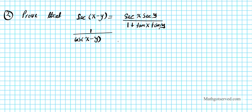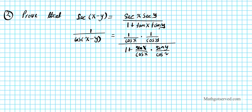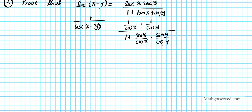On the right side: secant x becomes 1 over cosine x, secant y becomes 1 over cosine y, and tan x is sine x over cosine x, tan y is sine y over cosine y. Now applying the difference identity for cosine on the left side: cosine of x minus y becomes cosine x cosine y plus sine x sine y.